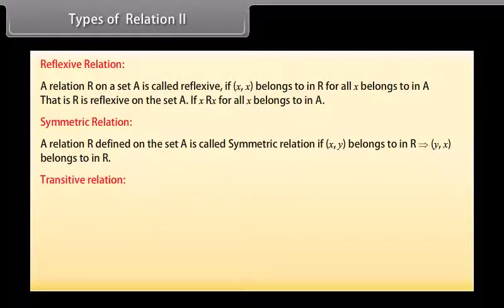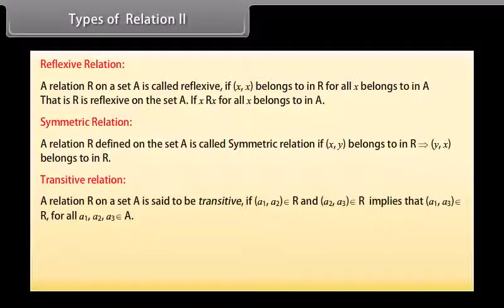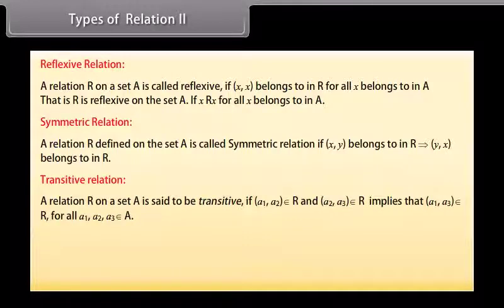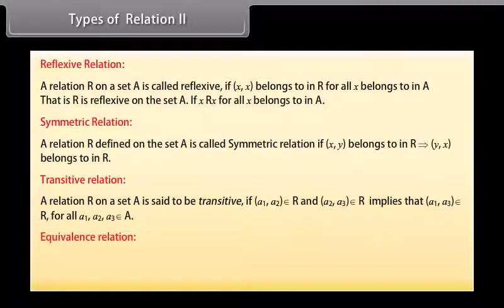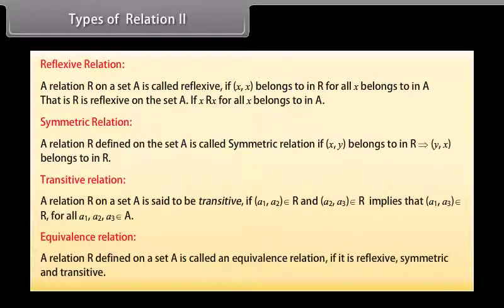Transitive relation: a relation R on a set A is said to be transitive if (a1, a2) belongs to R and (a2, a3) belongs to R implies that (a1, a3) belongs to R, for all a1, a2, a3 belonging to A. Equivalence relation: a relation R defined on a set A is called an equivalence relation if it is reflexive, symmetric and transitive.